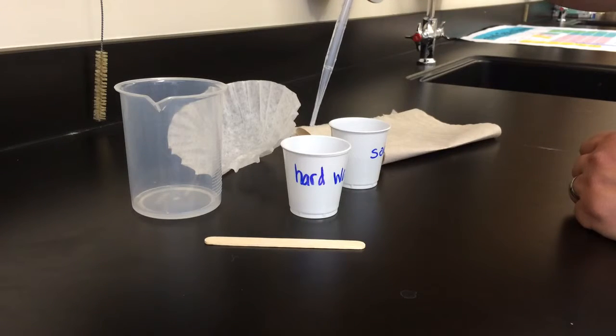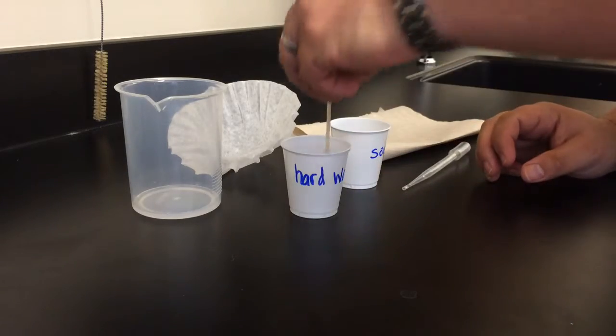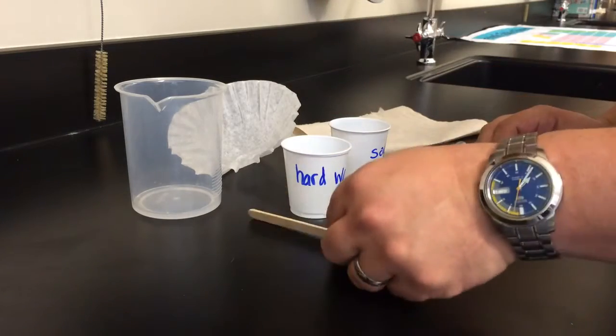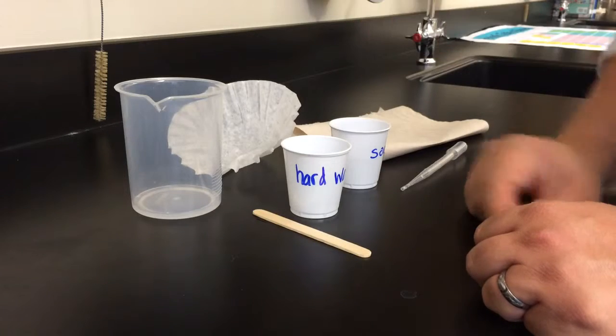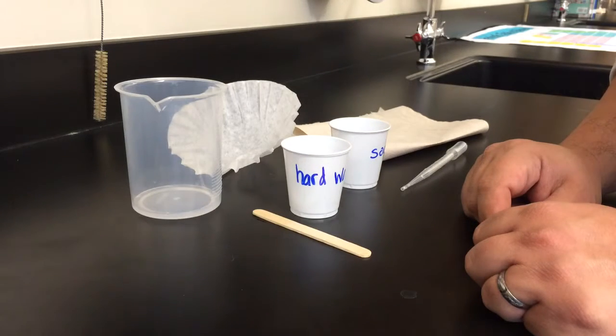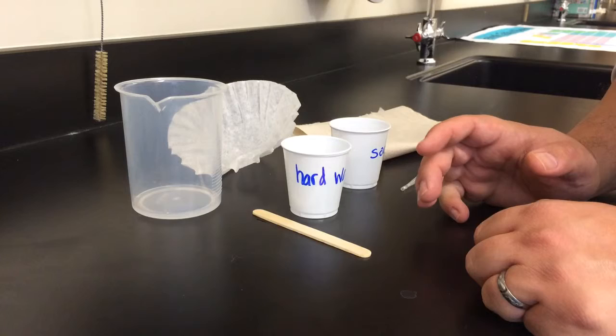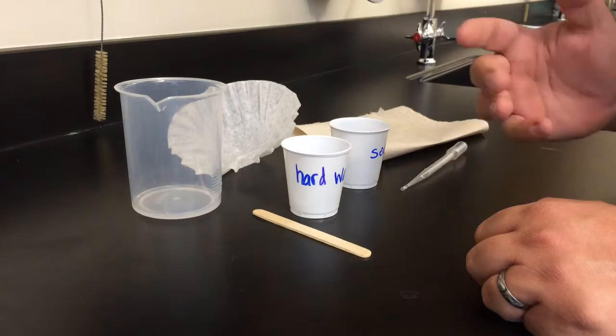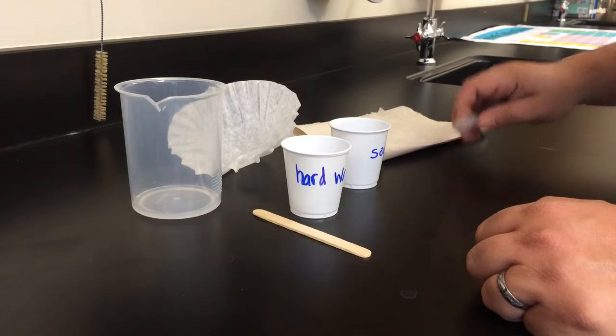Use your popsicle stick to sort of mix things around and you'll notice pretty quickly that there are floating bits of things in the hard water but the question is whether or not they are soap or are they soap scum, the precipitate that we're making.